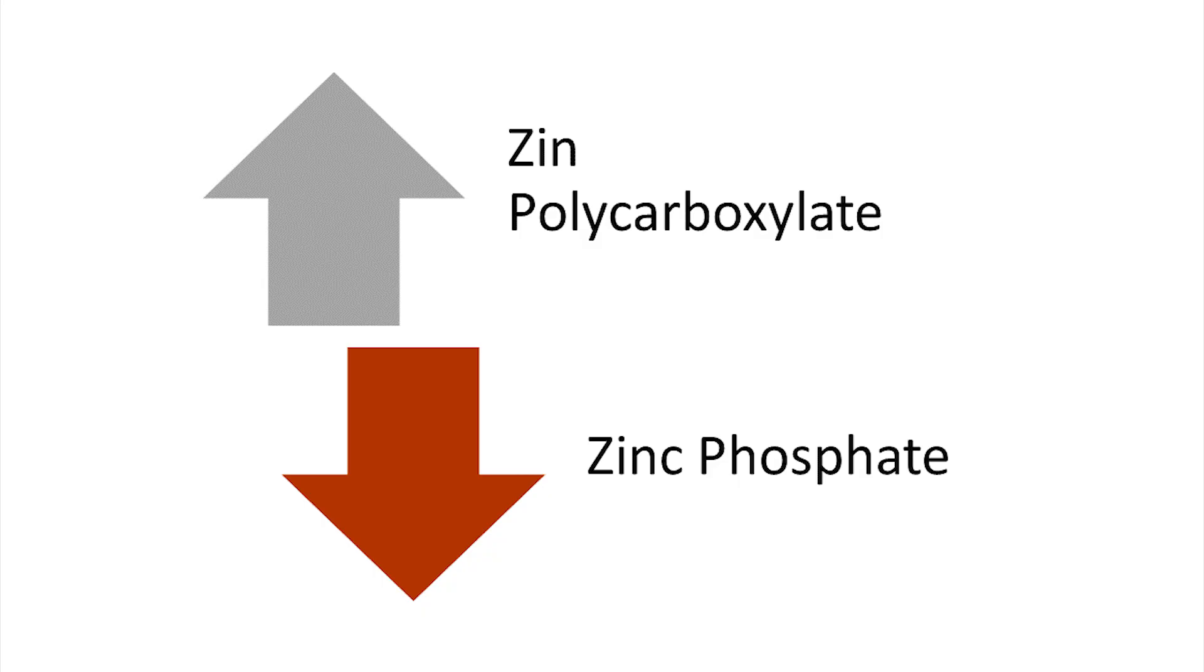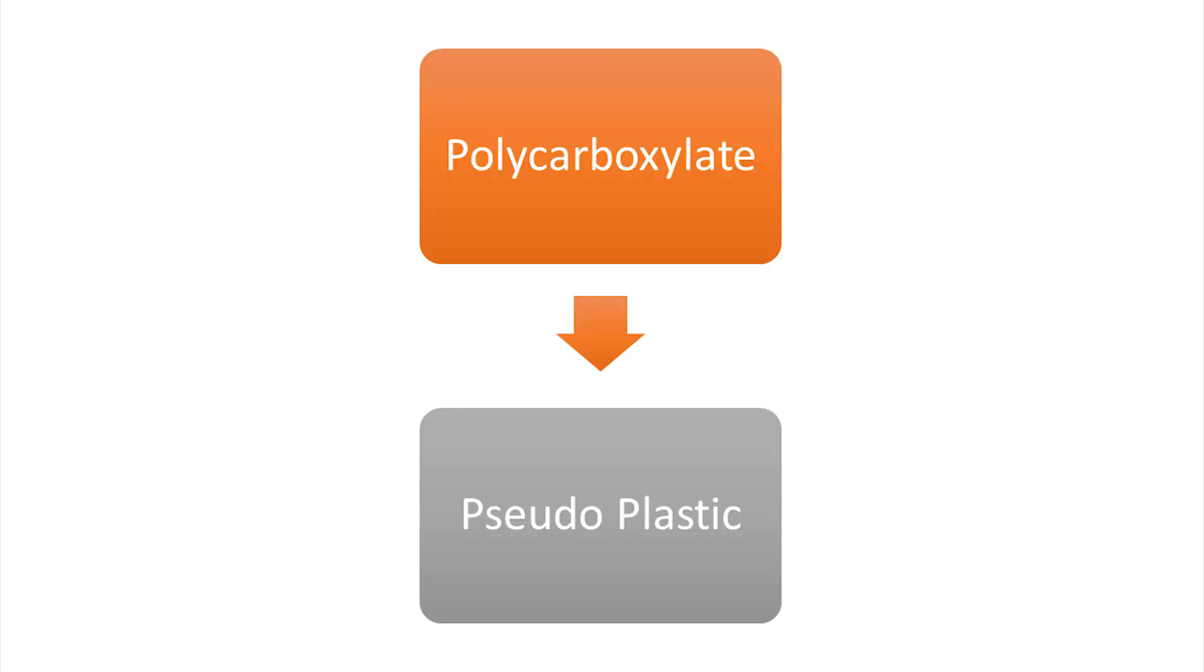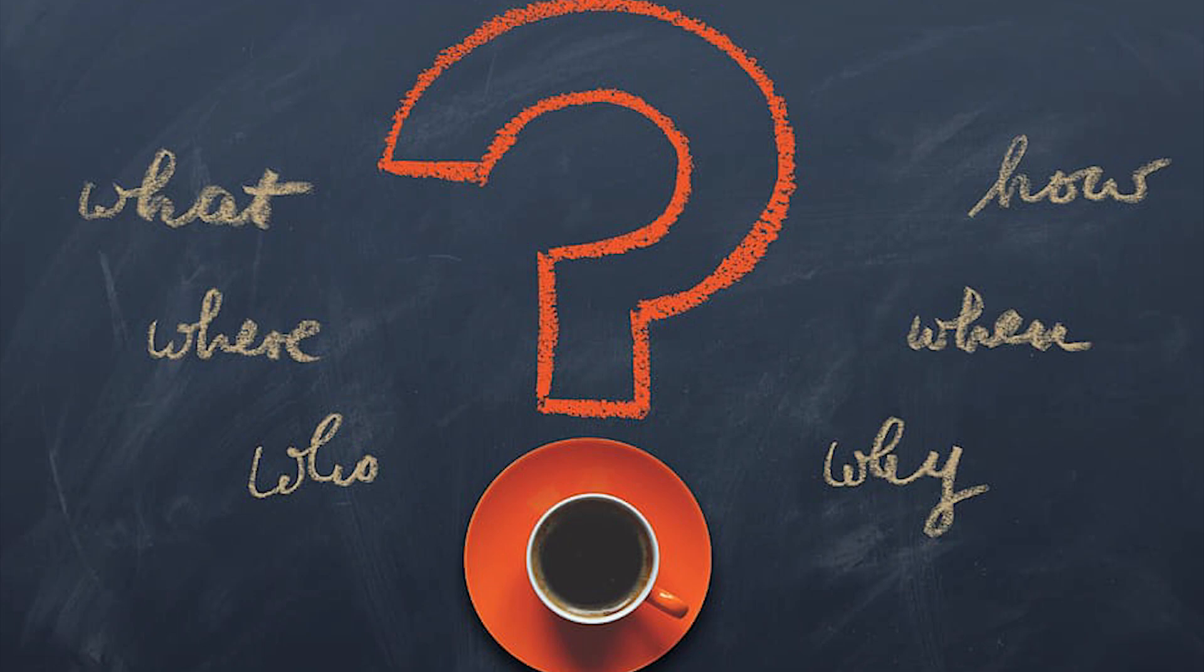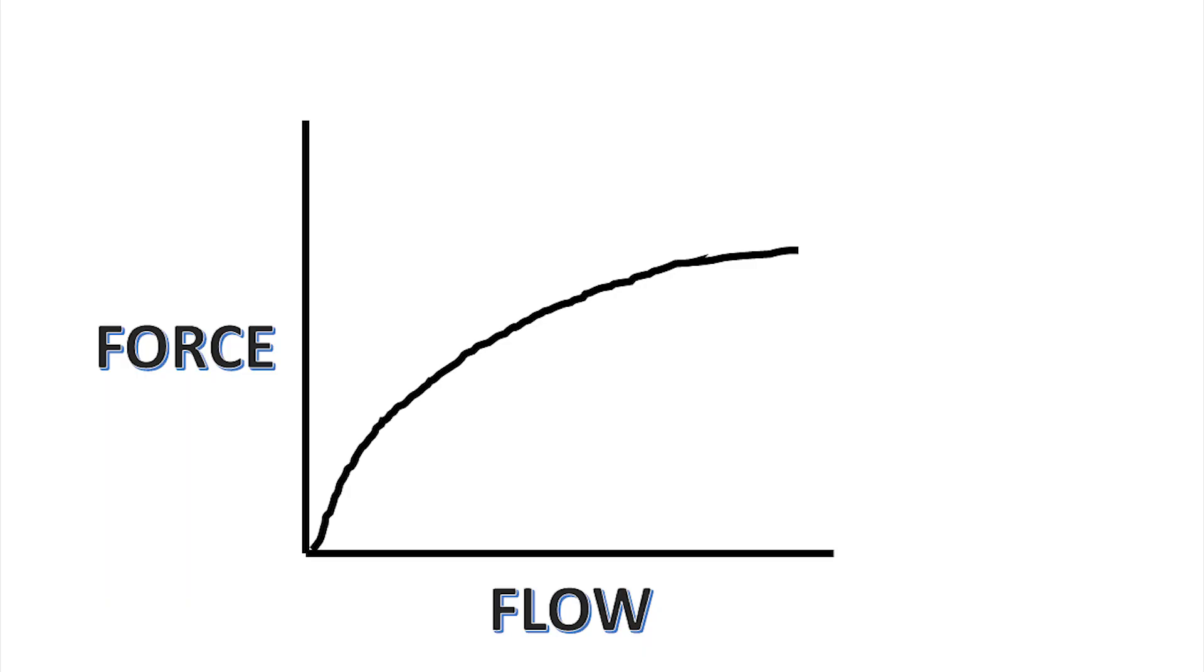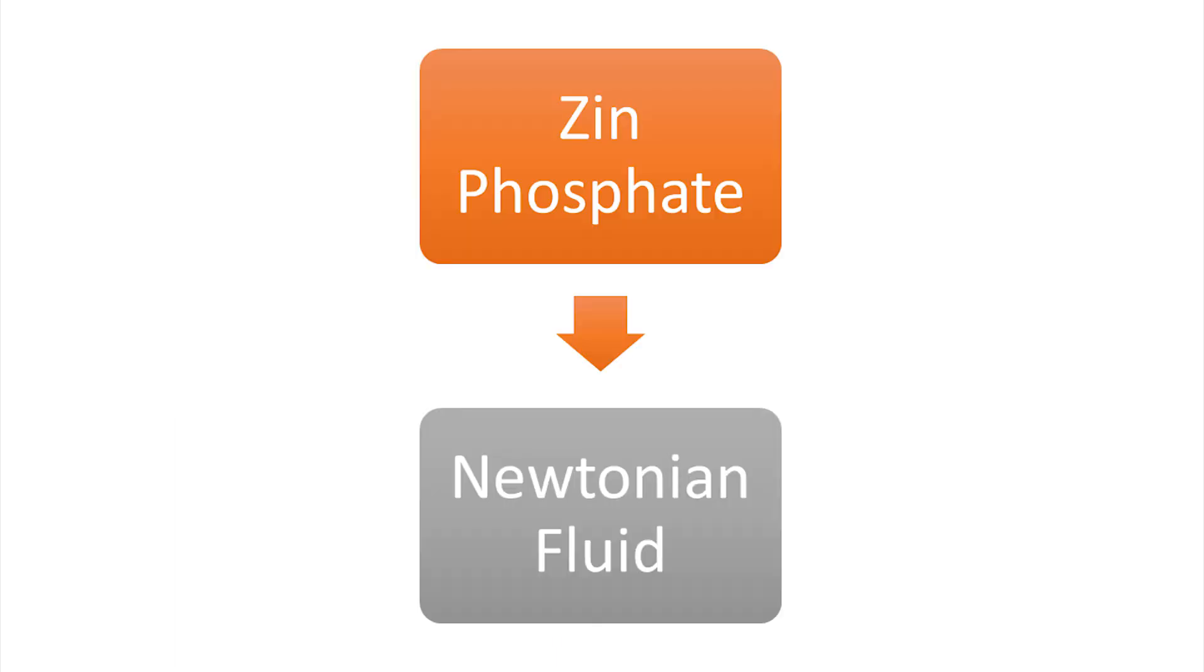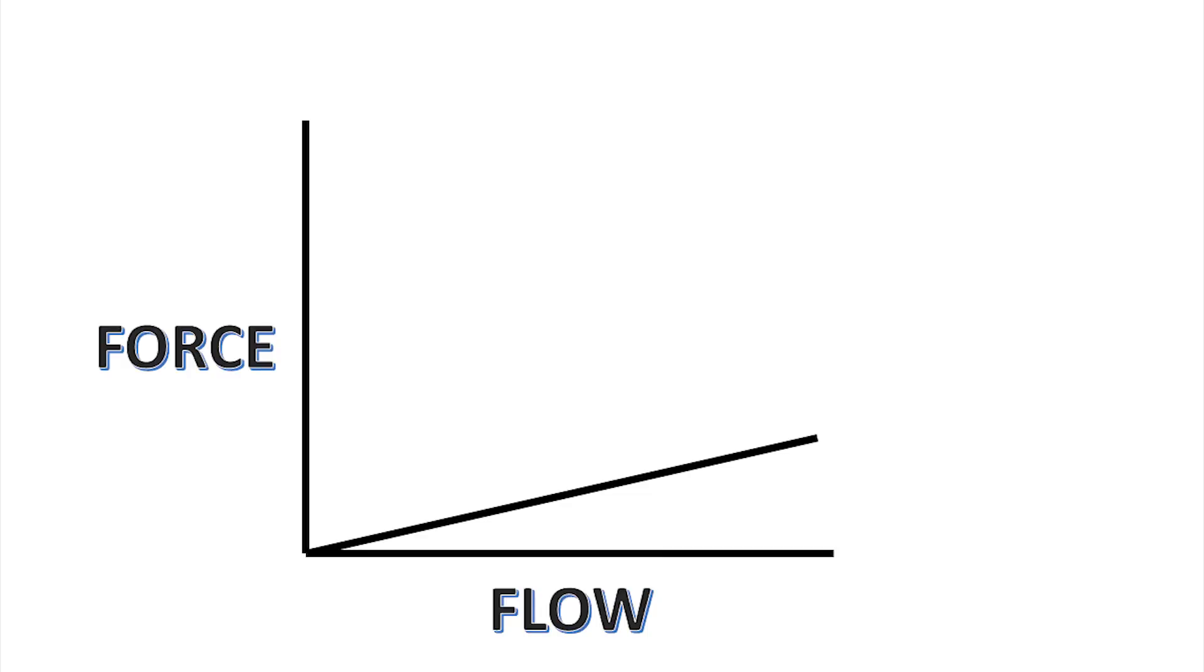Hence you may not get the 25 micron film thickness which is generally ideal for a luting cement, but surprisingly, even after being more viscous, zinc polycarboxylate has an ability to give a very thin film thickness of 25 micrometer, and that's because the polycarboxylate is considered to be pseudo plastic. What does pseudo plastic mean? It basically means that if you apply more pressure, the viscosity of the polycarboxylate cement will reduce. Although film thickness is less in zinc phosphate, zinc phosphate has less film thickness not because it is pseudo plastic; it is because zinc phosphate is newtonian fluid.